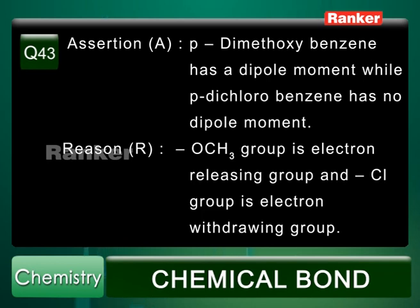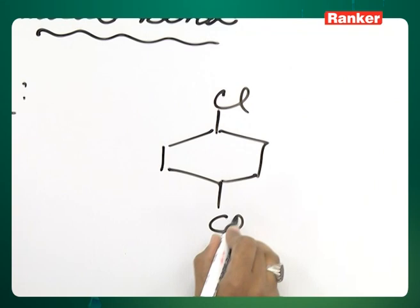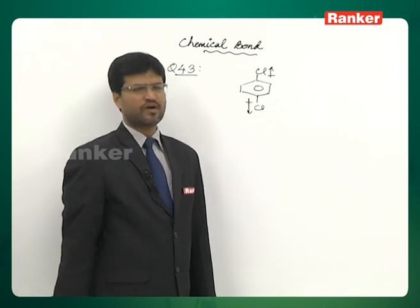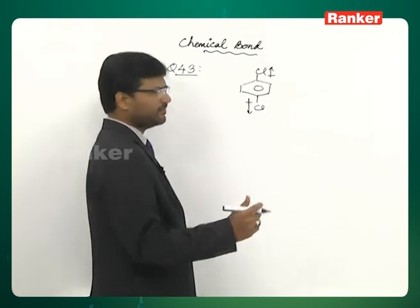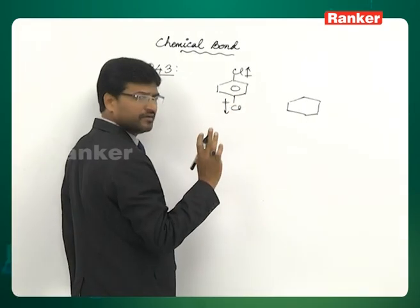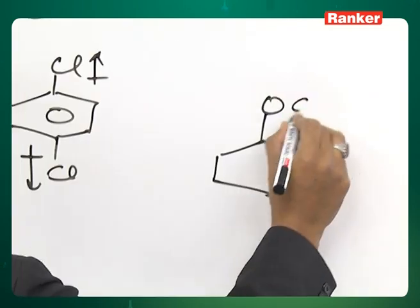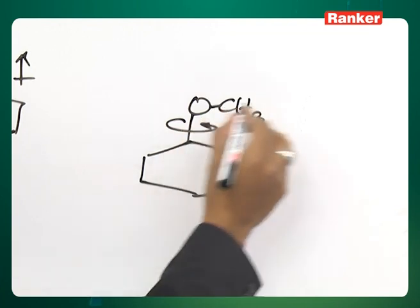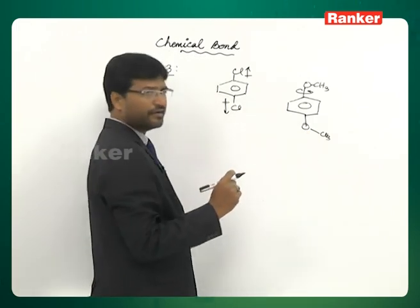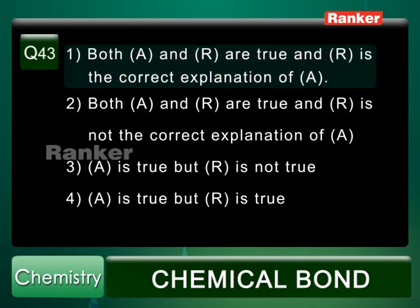Question number 43: Assertion — para-dimethoxybenzene has a dipole moment while para-dichlorobenzene has no dipole moment. Reason — methoxy group is electron-releasing and chlorine is electron-withdrawing. In para-dichlorobenzene, all atoms lie in the same plane and the two C–Cl dipoles cancel perfectly. In para-dimethoxybenzene, free rotation of the OCH3 group can take it out of the plane, creating a net dipole. So this is polar; para-dichlorobenzene is non-polar. Correct answer is the first option.